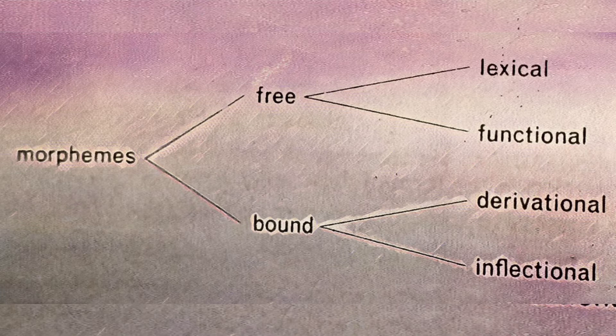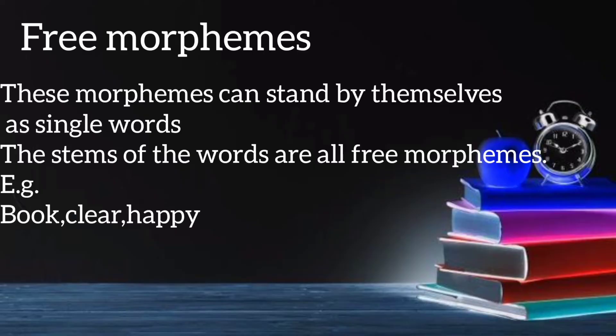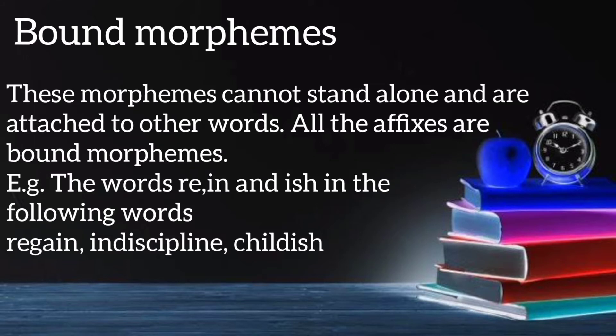Free morphemes are further classified into lexical and functional morphemes, and bound morphemes into derivational and inflectional morphemes. Free morphemes can stand by themselves as single words — all the stems of words are free morphemes, for example 'book', 'clear', and 'happy'. Bound morphemes cannot stand alone and are attached to other words; all affixes are bound morphemes, for example 're' in 'regain', 'in' in 'indiscipline', and 'ish' in 'childish'.